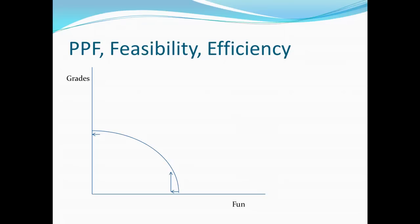Another point that we can draw out of this is the idea of feasibility and efficiency. So using exactly the same graph, I can label three distinct regions. The first one is the region that falls inside the production possibility frontier, right here. This region we would call feasible but inefficient. If I can produce anything along the curve, then I can naturally produce any point inside the curve. That is, I can choose to have less fun and worse grades. But doing so would be inefficient.